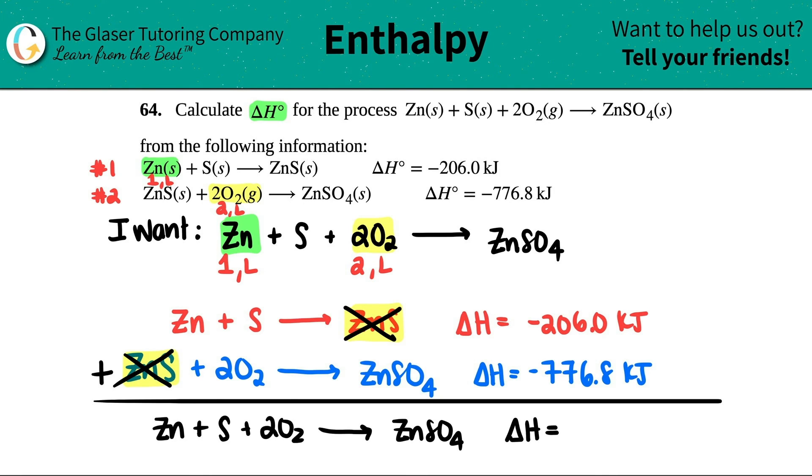So now all I have to do is just add the delta H values. So negative 206 plus negative 776.8. I get negative 982.8. And that's in kilojoules. And that is your answer. Calculate the delta H. Here it is. So we're going to release, because it's negative, 982.8 kilojoules into the surroundings when we make this reaction. And that's it.